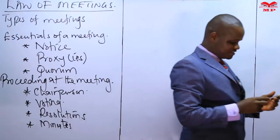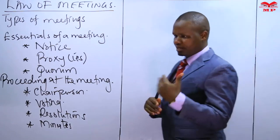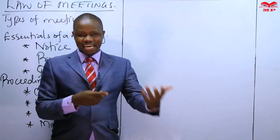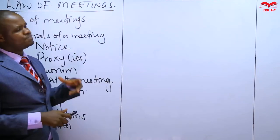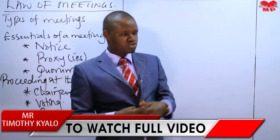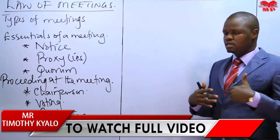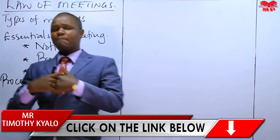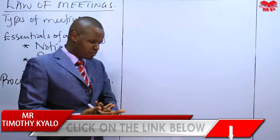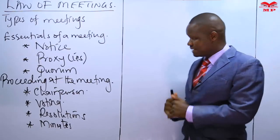Before we look at the types of meetings, we should ask ourselves why these meetings are held. There are various meetings held with different objectives. For instance, directors' meetings may be held to share ideas on management, make decisions on running the company, or consider matters raised by members such as investments. Members' meetings may be held to approve resolutions, make declarations, approve dividend payments, or approve financial statements.